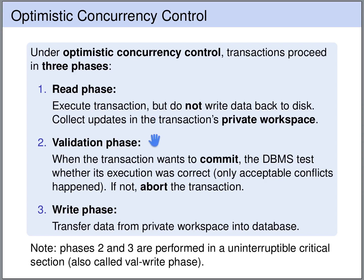Next is the validation phase. At the moment when the transaction tries to commit, the database management system tests whether the execution was correct — that is, whether there have been only acceptable conflicts. If not, if there have been unacceptable conflicts, then this or another transaction will be aborted to resolve the conflict.